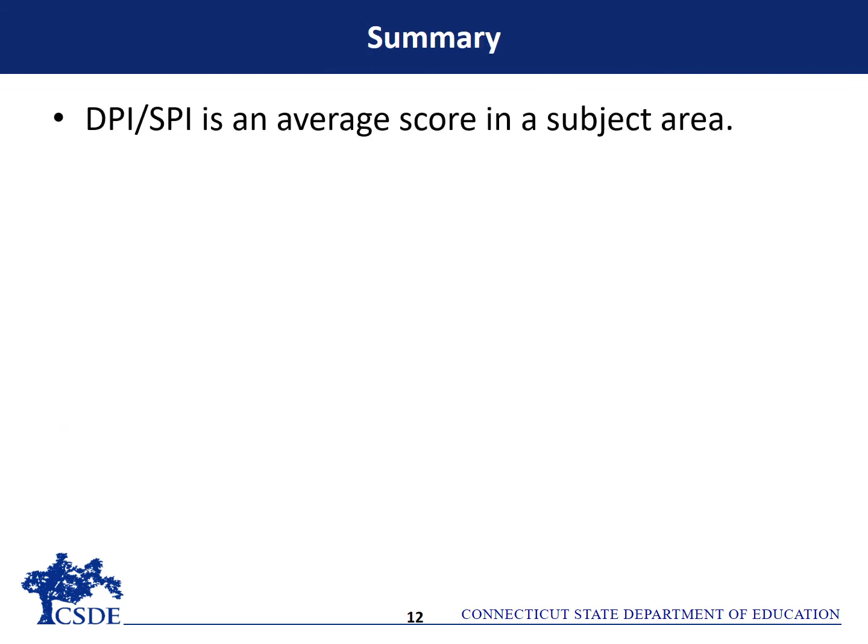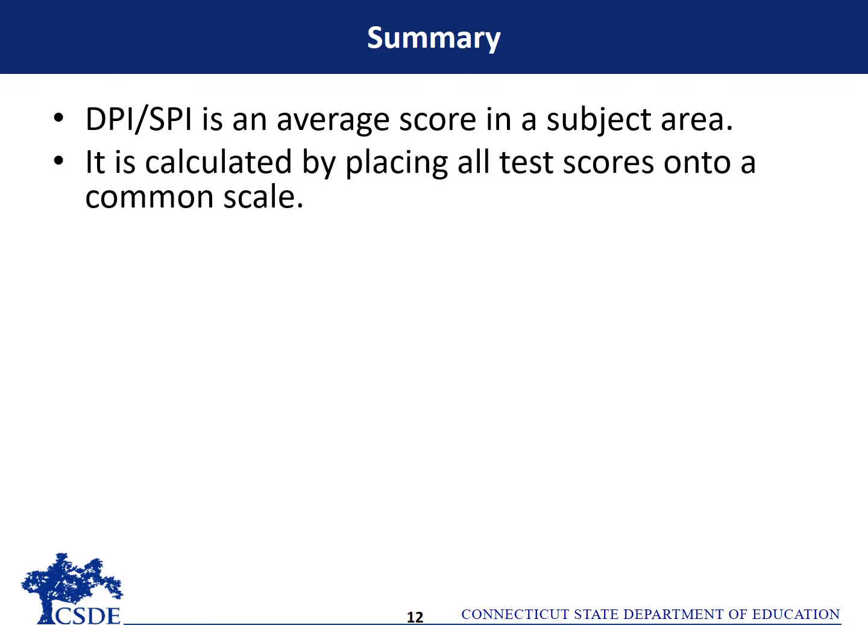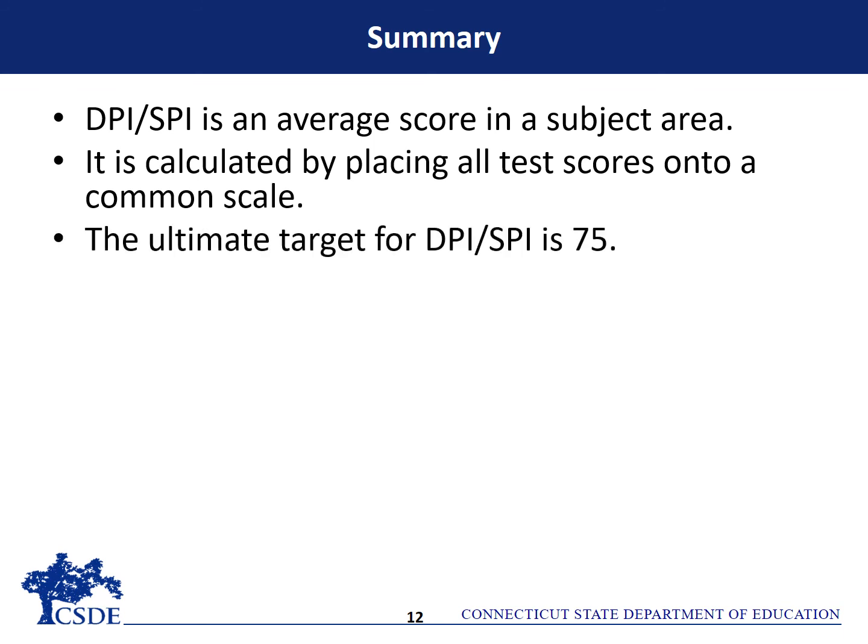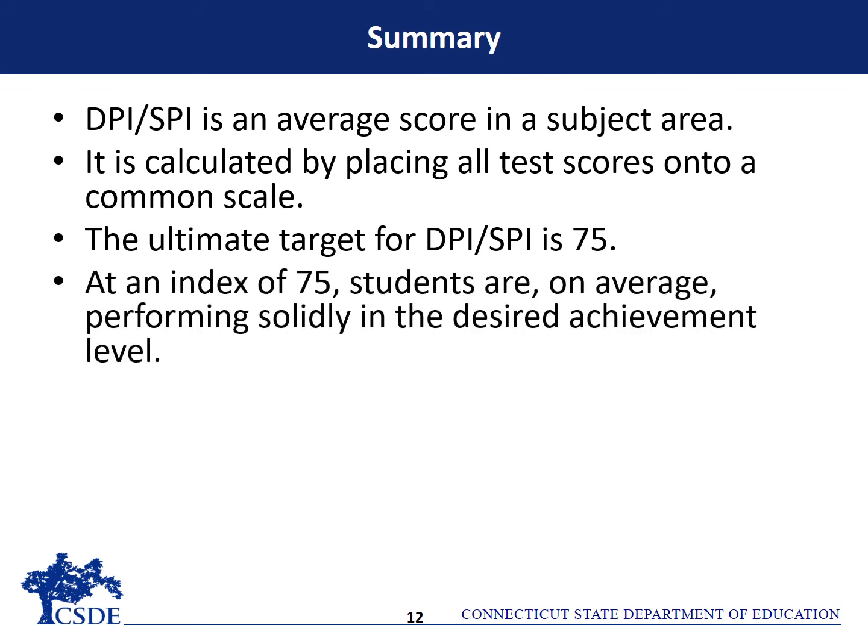Connecticut's performance index is an average score in a subject area. It's calculated by placing all test scores onto a common scale. The ultimate target for the performance index is 75. At an index of 75, students are, on average, performing solidly in the desired achievement level.